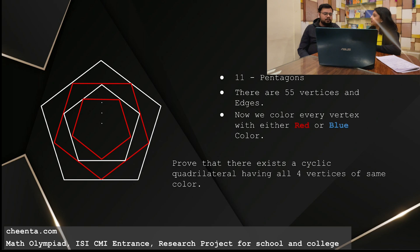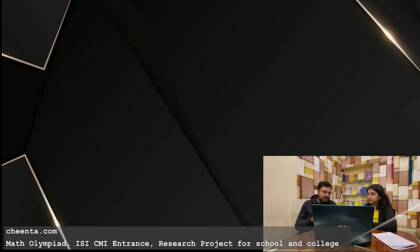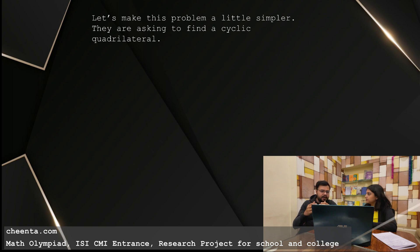So what we need to prove now? Our goal is to prove that within this diagram, there should be a cyclic quadrilateral having all of the four vertices of same color. It can either be red or can be blue. Tell me what is cyclic quadrilateral? I want to make this problem a little simpler. And while I will be doing that, I will just explain what is a cyclic quadrilateral.